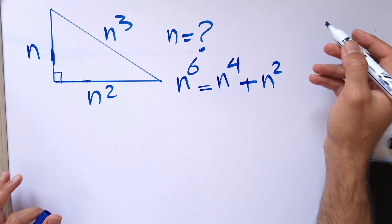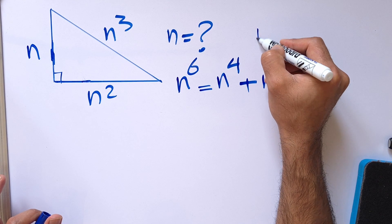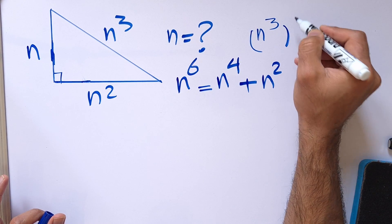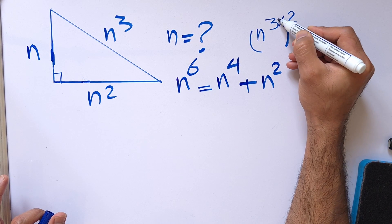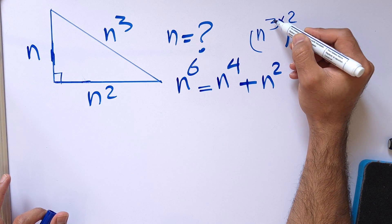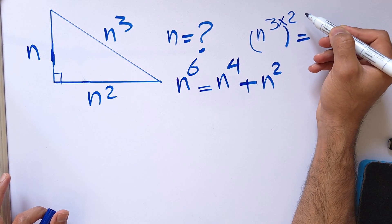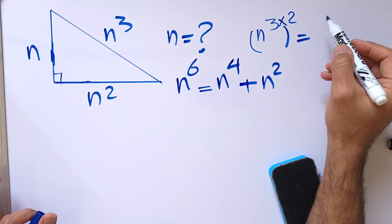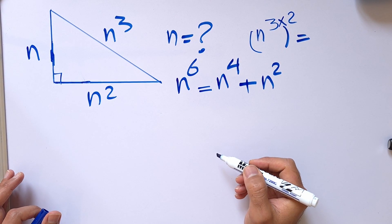For those who got confused about where the 6 came from: n cubed is the hypotenuse, and when we raise it to the power of 2, according to the laws of exponents we multiply the exponents together. So we can write it as n to the 3 times 2, or n to the 6. This is the famous exponents rule.